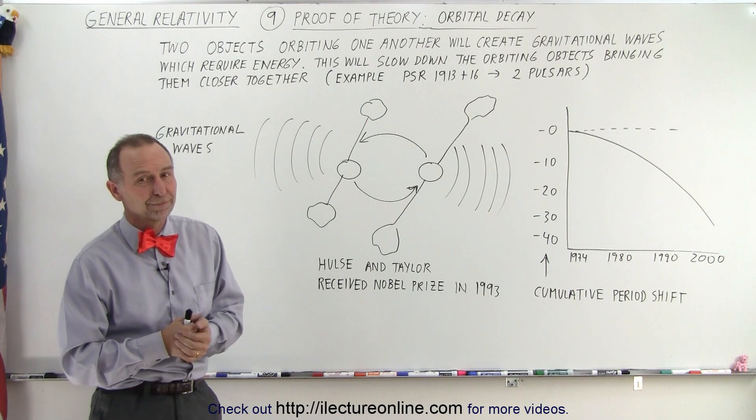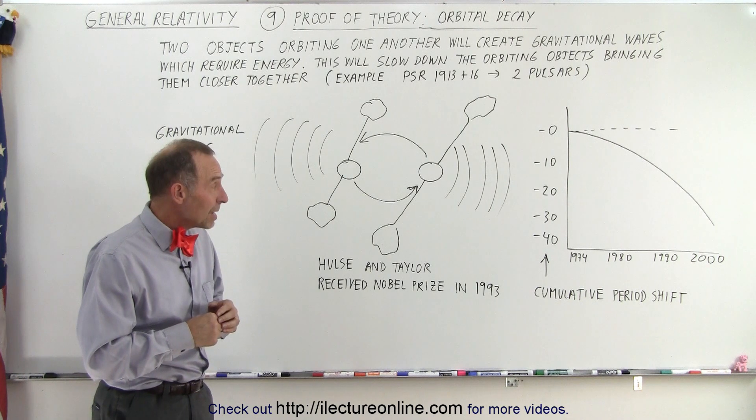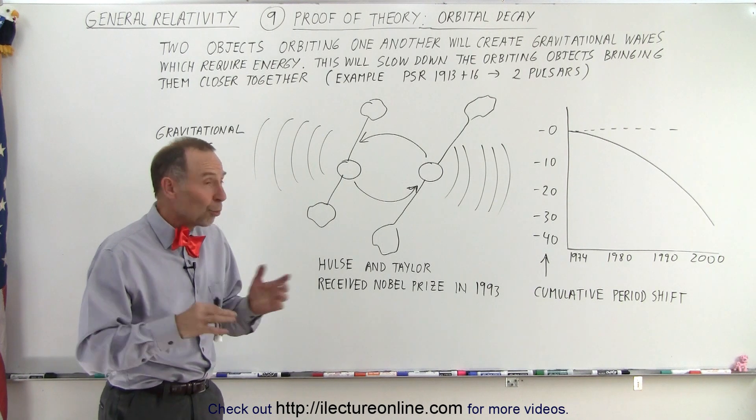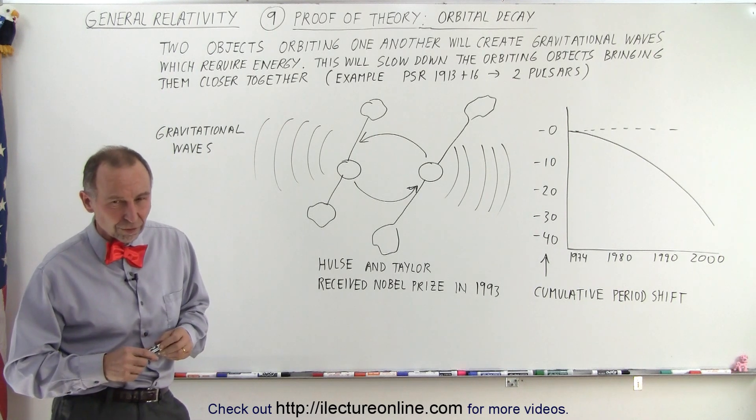So how close are those two pulsars? Those two pulsars happen to be probably in the order of an astronomical unit, two astronomical units away, kind of the size of a solar system.